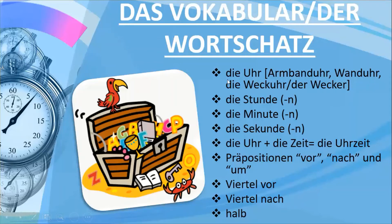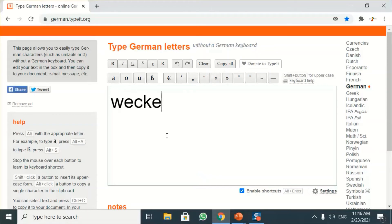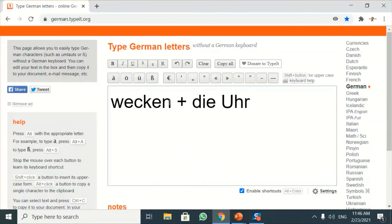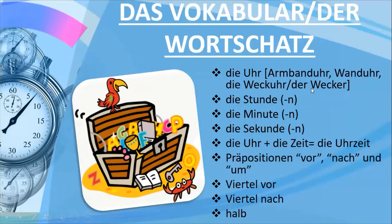We also have the alarm clock, which is nowadays usually found in mobile phones, but if you keep a traditional alarm clock, that is called 'der Wecker'. It is again a compound noun, made up of the verb 'wecken', which means to wake, and 'die Uhr', the clock. So compound nouns in German are not only made up of two or more nouns — they can also come from a verb and a noun.